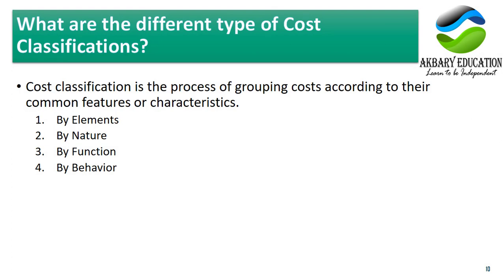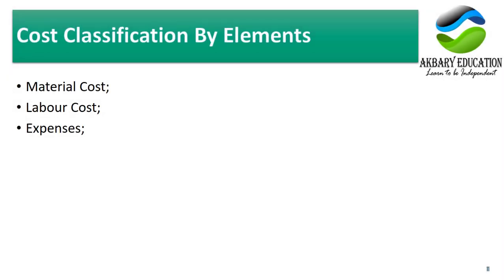What are the different types of cost classification? There are various methods by which cost is divided: by elements, by nature, by function, and by behavior. Cost classification is the process of grouping costs according to their common features and characteristics — bringing together costs that share specific characteristics into one group.